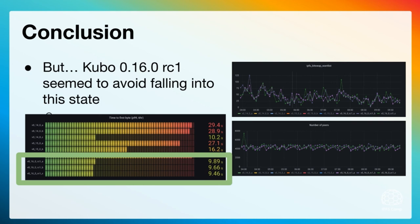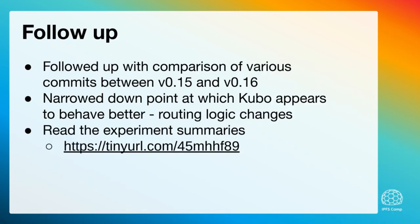What we did see was that the new release candidate did seem to avoid falling into that state. You can see on the right-hand side that the bitswap want list sizes were reasonable — around 50 most of the time for those three instances — and the number of peers was exactly what we expected for this kind of experiment. As a follow-up, you can read the summaries on our public Notion page. We followed up with a comparison of various commits between the two versions and did narrow it down to a point at which Kubo appears to be more stable at high volumes of usage — we think that's related to some changes in the routing logic.